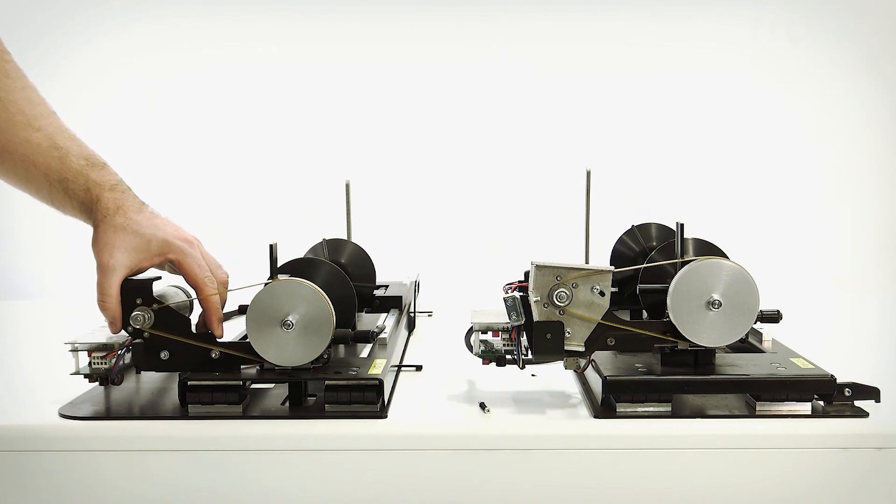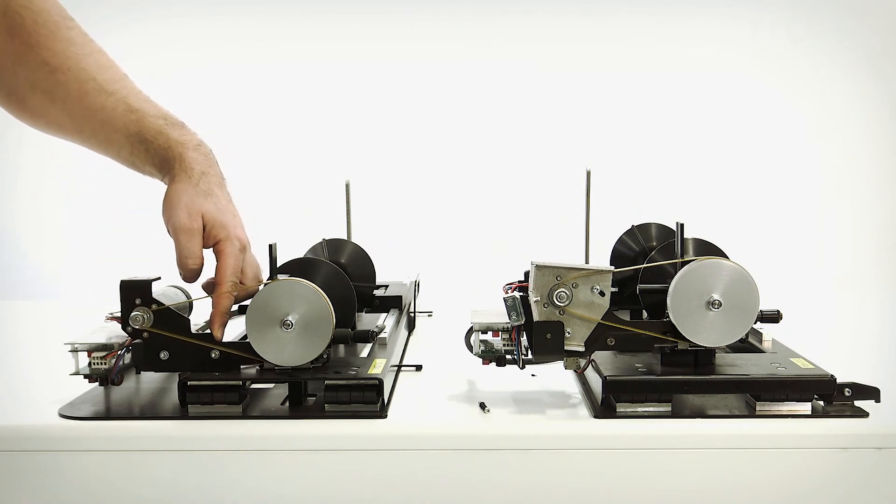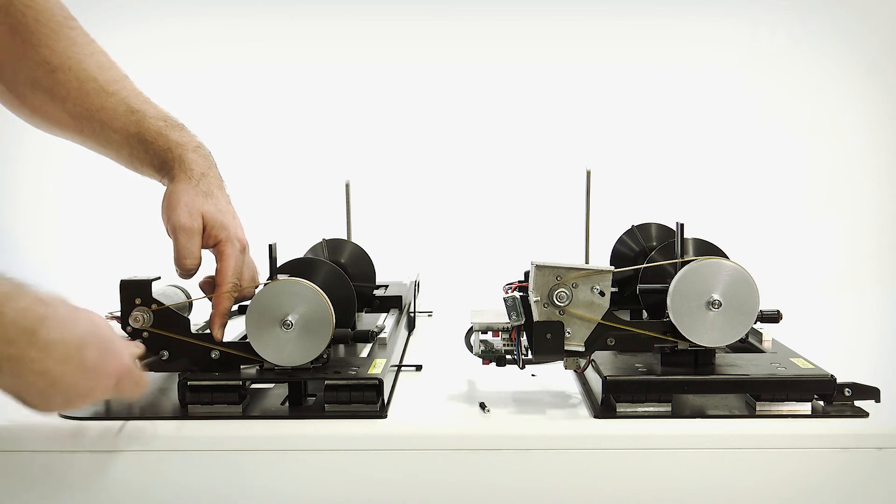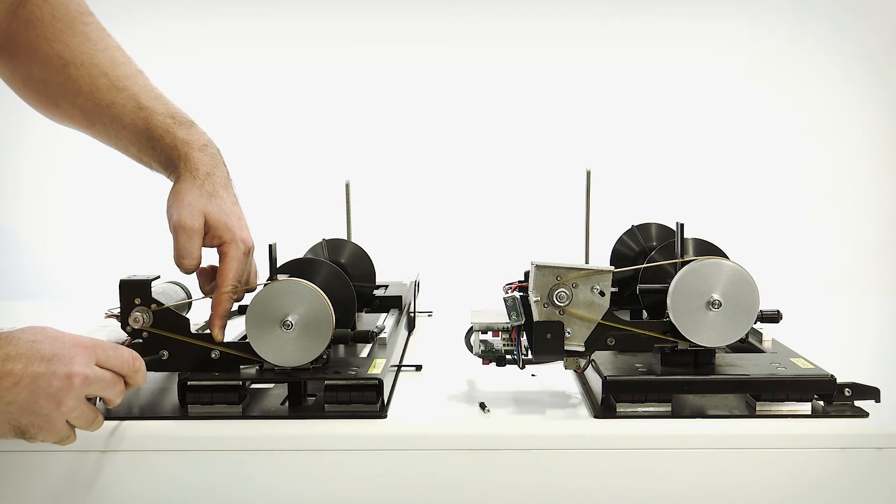To tension the belt on the Speedy 300, regardless if it's a cone or the drive roll mechanism that is installed, you tighten the belt by pushing the motor holder plate like this and then tighten the screws.